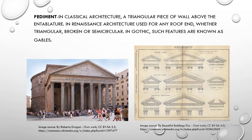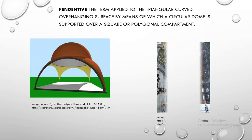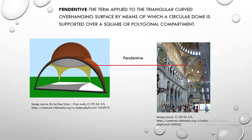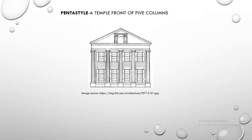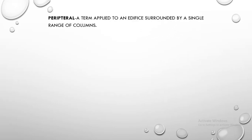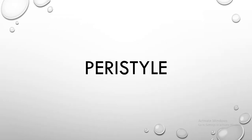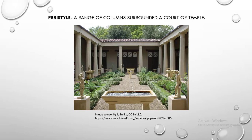In Gothic, such features are known as gables. Pendentive. Pendentive is the term applied to the triangular curved overhanging surface by means of which a circular dome is supported over a square or polygonal compartment. Pentastyle. Pentastyle is a temple front of five columns. Peripteral. Peripteral is a term applied to an edifice surrounded by a single range of columns. Peristyle. Peristyle is a range of columns surrounding a court or temple.